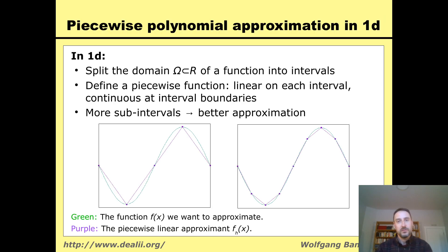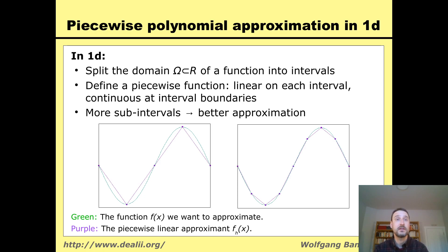Just to remind you, the way we do this for one dimension is that we split the domain of a function — in the one dimensional case, all of the x's for which the function is defined — into small intervals. On each interval we define a linear function, or a polynomial. The polynomial at the left and right of each one of these nodes has the same value, so we end up with a piecewise polynomial function that is continuous.